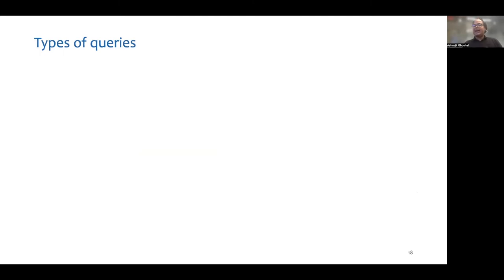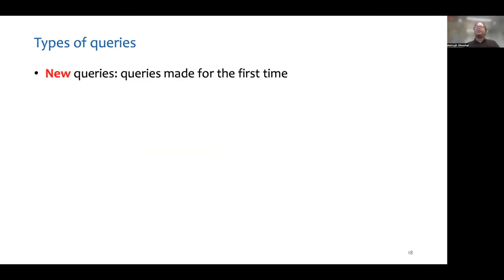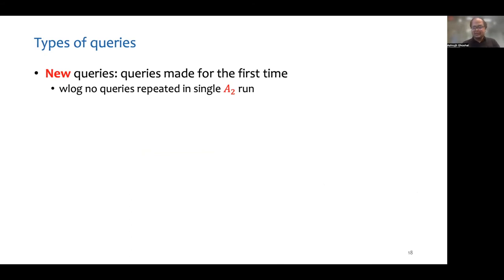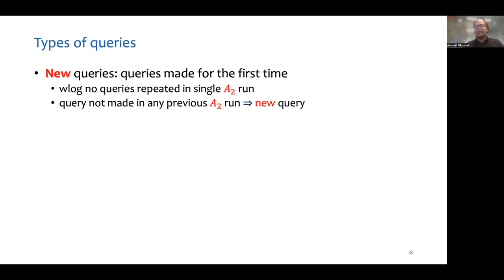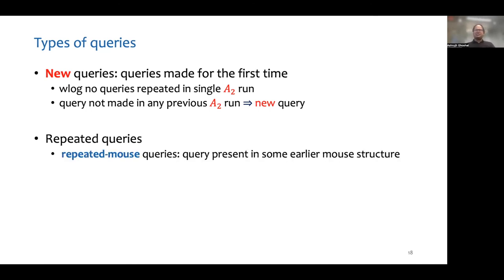Next, we categorize the types of queries made when the adversary is run on different salts. We say that a query is new if it is being made for the first time; we mark new queries in red. If a particular query had not been made when the adversary was run on a prior salt, the query is new. Repeated mouse queries are those present in the mouse structure of some earlier salt; we mark these in blue. Any other repeated query is called a repeated non-mouse query, and we mark these in green.